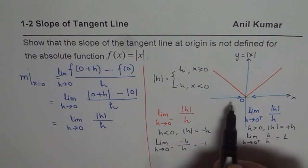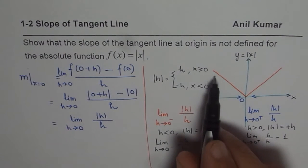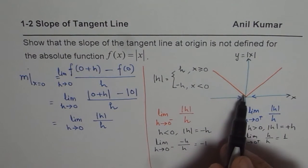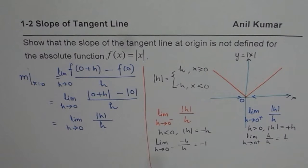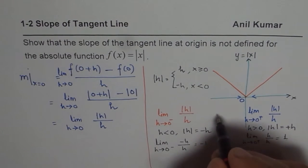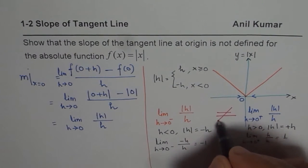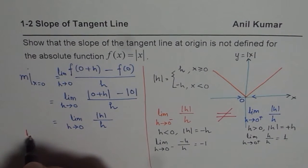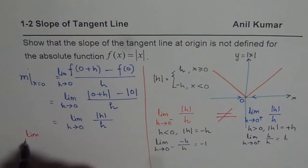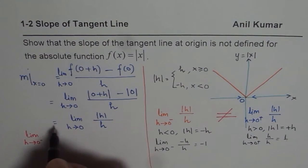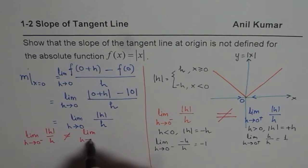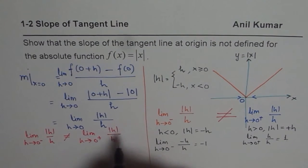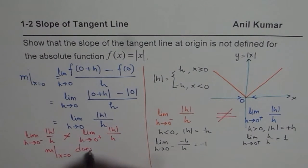Now looking at these two limits: approaching from the left side gives −1, and you can see the slope of that line is also −1. On the right side, the slope is +1. Both limits are not equal — the left-hand limit and the right-hand limit are not equal. Since they are not equal, the slope of the tangent at x = 0 does not exist.